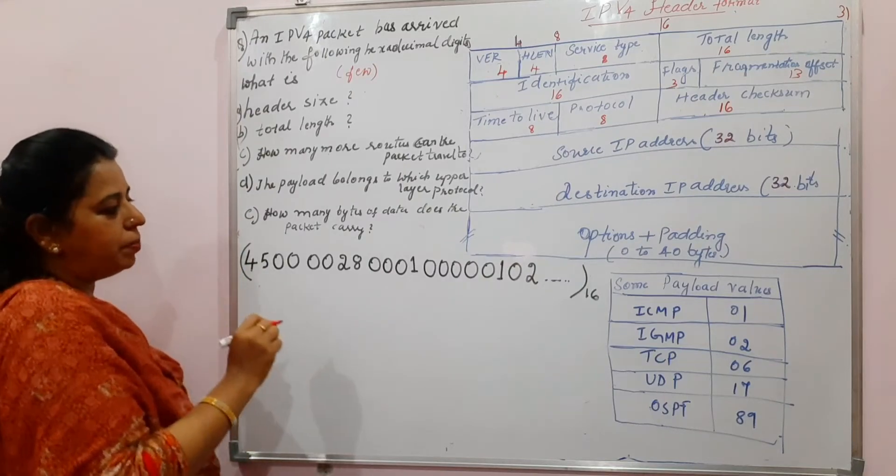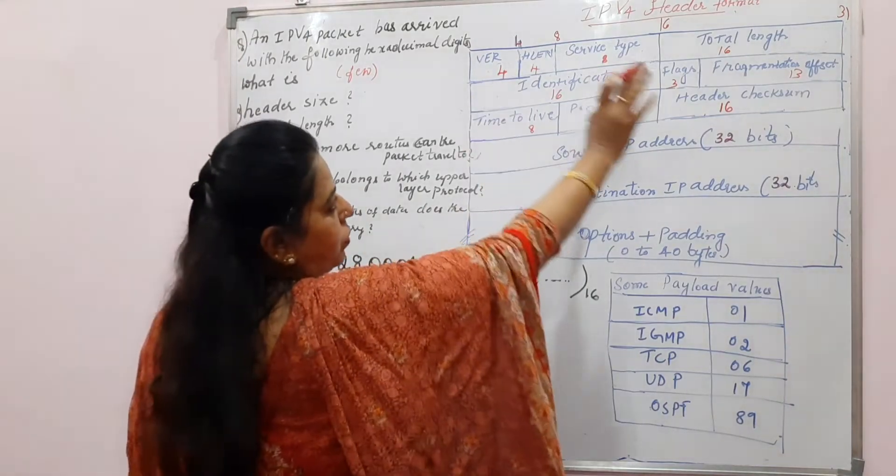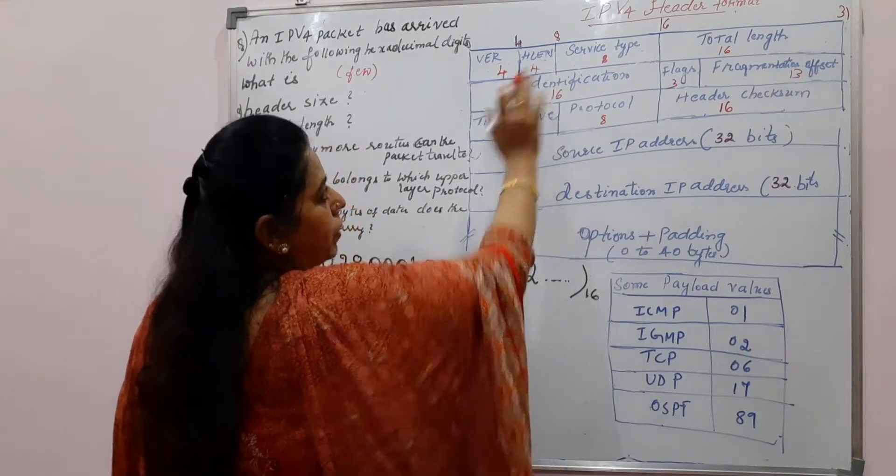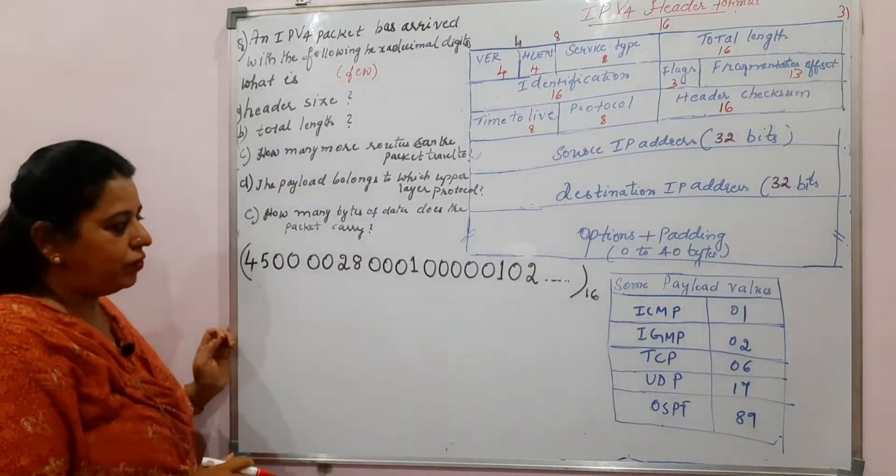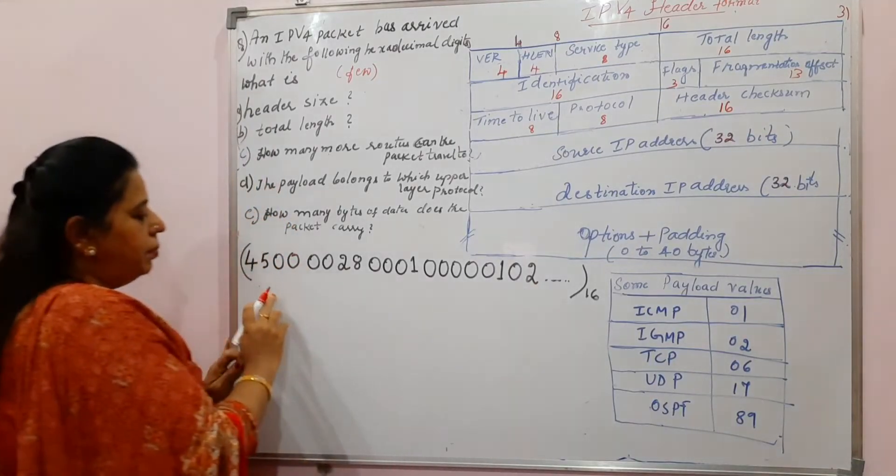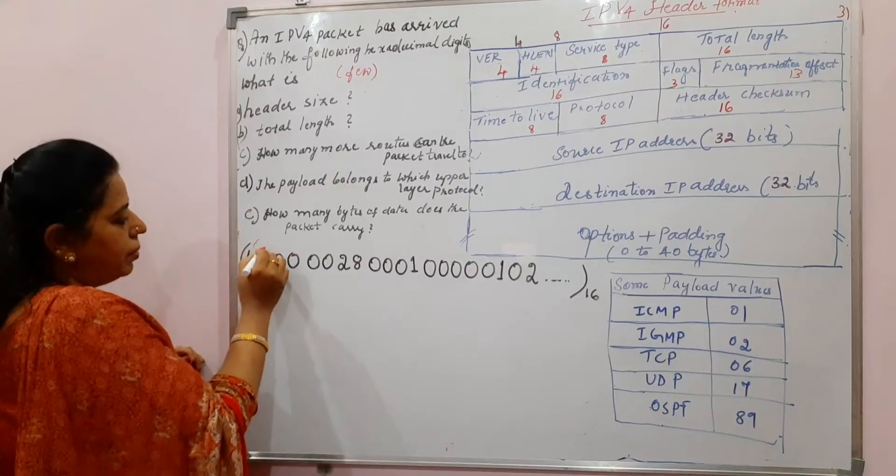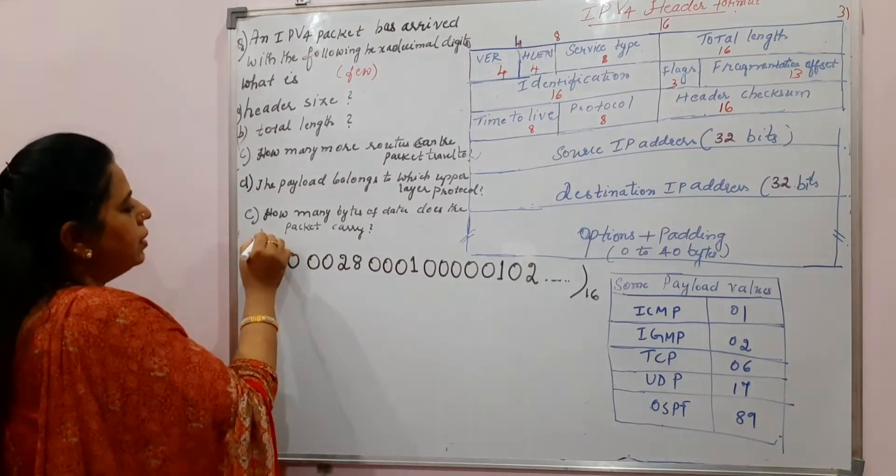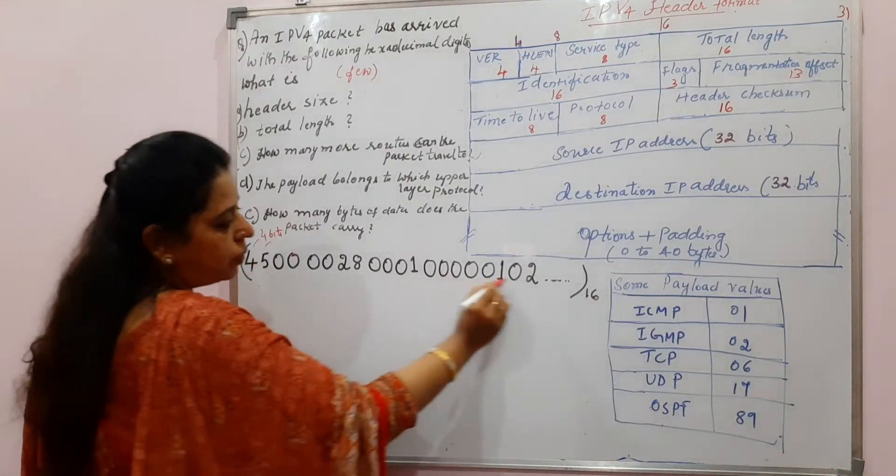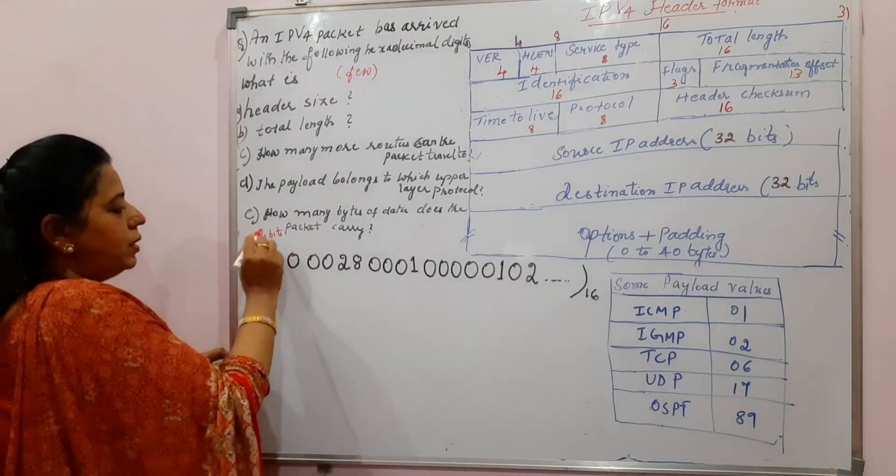Very simple way, first and foremost thing is you should be knowing the different fields here. Totally we have 12 fields and you should be knowing how many bits are there for each of the field. Since these are represented in hexadecimal, each number here, each number whatever is mentioned is of how many bits? 4 bits. Each integer number that is shown in this question is of 4 bits.